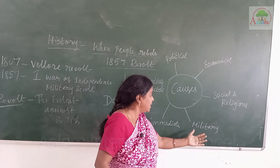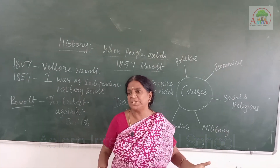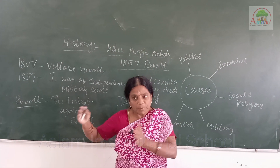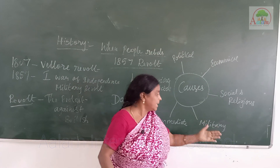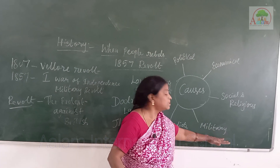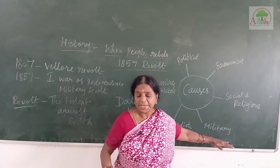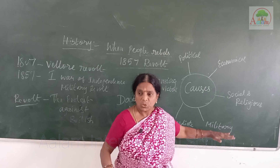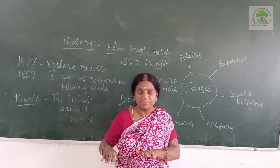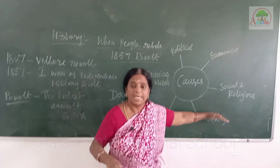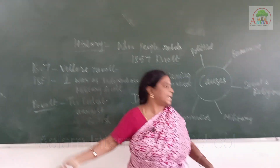Next are the military causes. Enfield rifles were issued to both British and Indian soldiers. However, the expenditure and high positions were only for British leaders and soldiers, not for Hindus and Muslims. British soldiers received high salaries, not Indian soldiers — Indian soldiers were getting very low salaries.